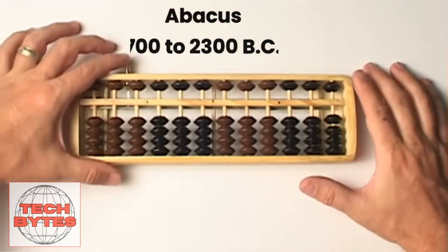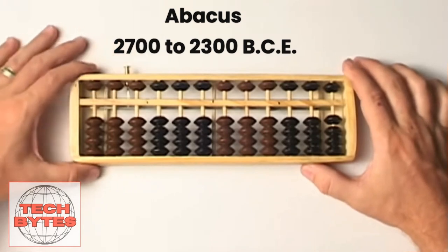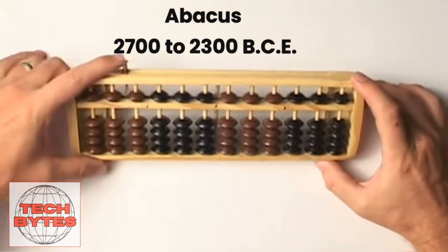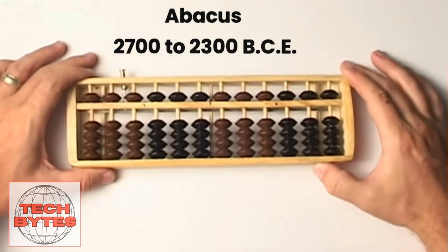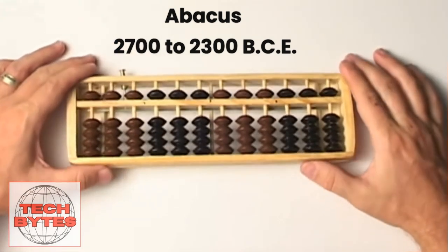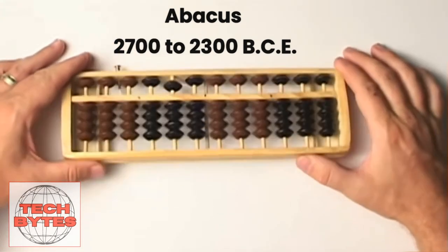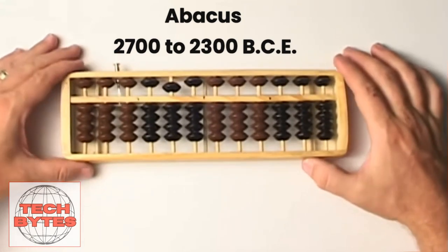Let's start with the abacus, one of the oldest and most basic computing devices. It consists of a series of beads or stones that slide along rods or wires, representing digits.